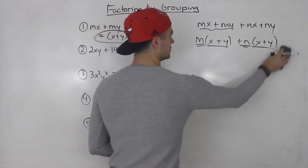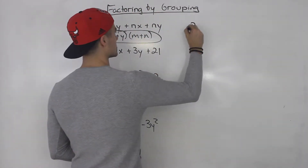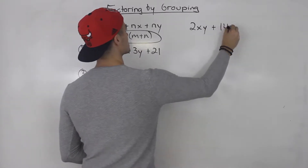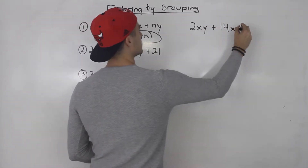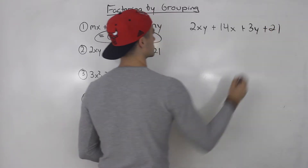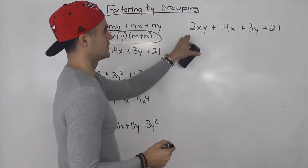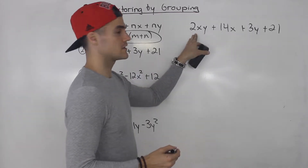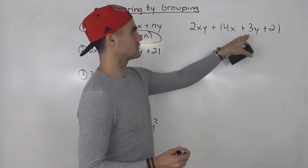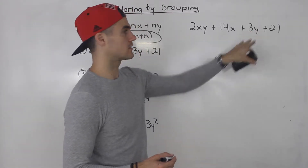So number two, we got 2xy plus 14x plus 3y plus 21. Notice the pattern here — you could take out a 2x from the first two and be left with y plus 7. And then you could factor out a 3 from the last two, and you'd be left with y plus 7 again.